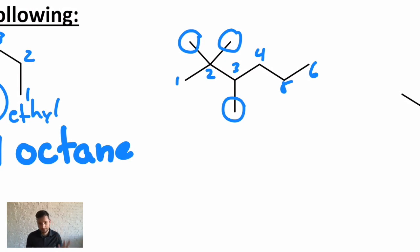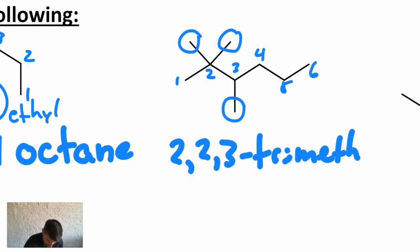And I have to say where all the methyls are. Even though it might sound redundant at first, they are on carbons 2, 2, and 3. And that's exactly how you name this: 2,2,3-trimethylhexane.